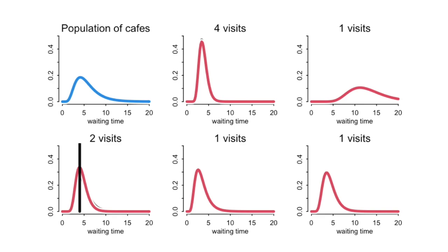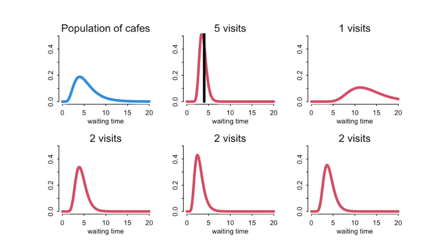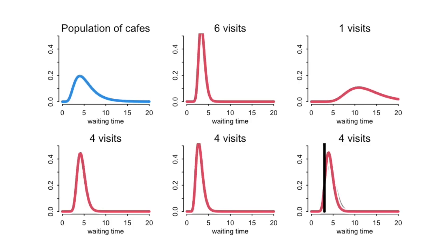For the optimally learning golem with memory, every visit has implications for the estimates of every cafe in the population. But as more and more data accumulates, the evidence for each cafe will eventually overwhelm any information from the population. Revisiting cafe beta again gives a long wait time, and the golem pushes its posterior distribution back to the right, away from where it had shrunk towards the other cafes, because it was becoming skeptical that its first observation at cafe beta was representative. With the second long coffee, the golem updates appropriately.